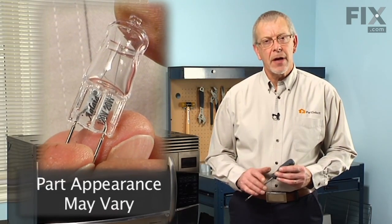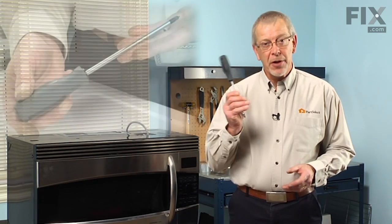Today we're going to show you how to change the interior halogen light bulb on your microwave. Really easy job. All we're going to need is a Phillips screwdriver. Let me show you how we do it.